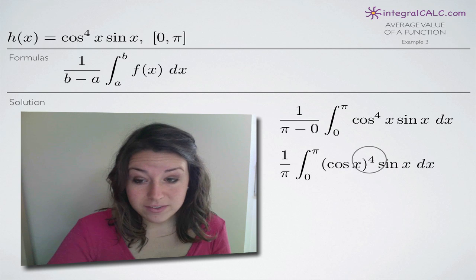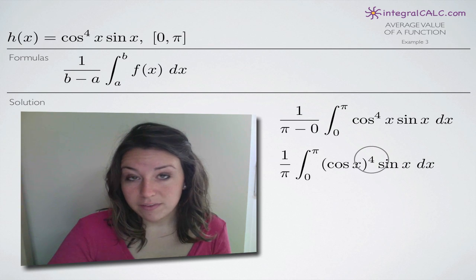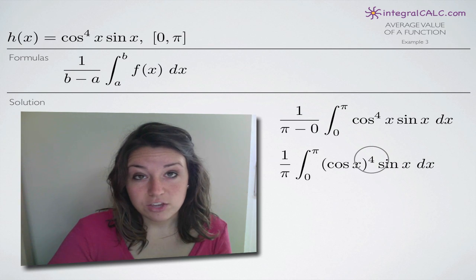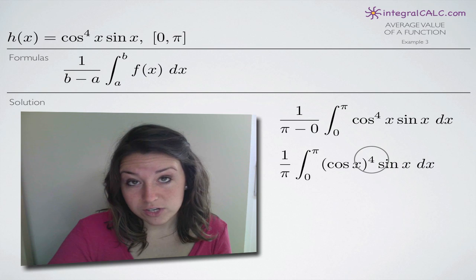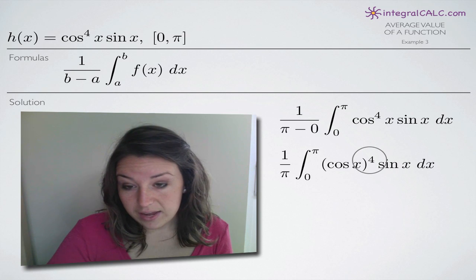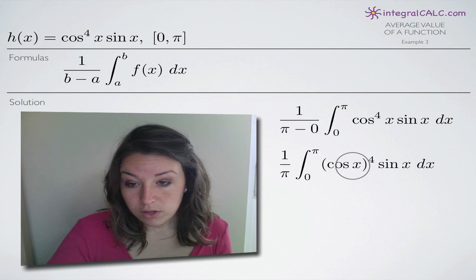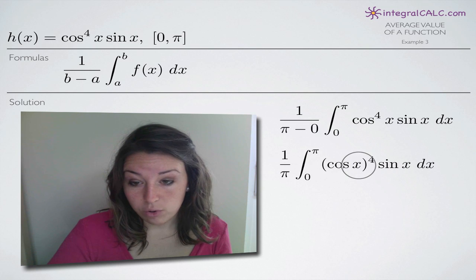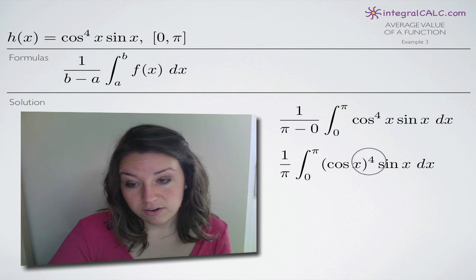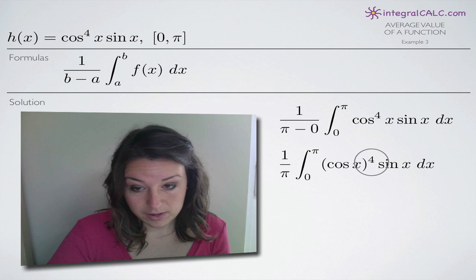This problem is going to require us to use u-substitution to solve the integral, and we're going to substitute u for cos of x. So it's easier to have this fourth out here.